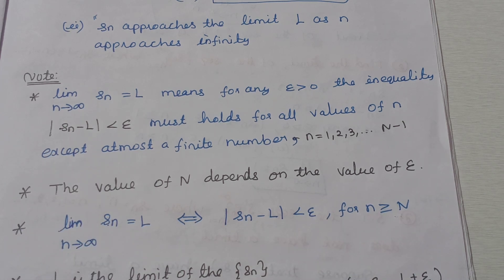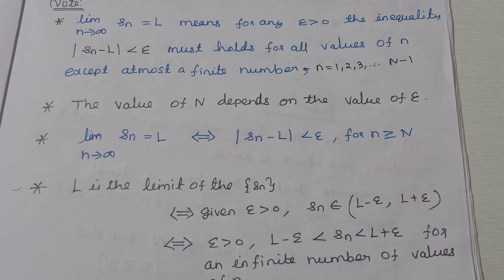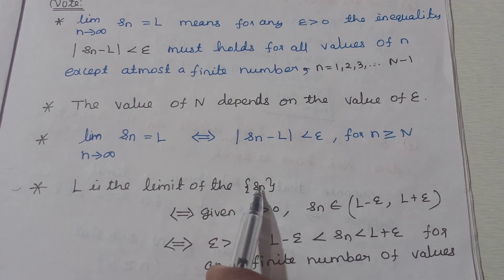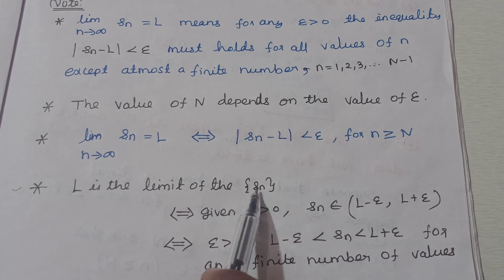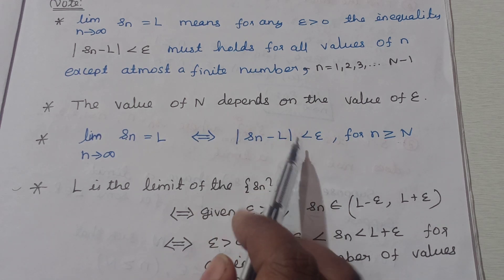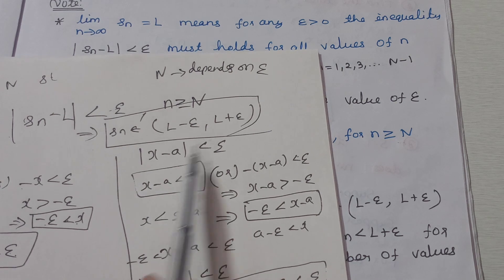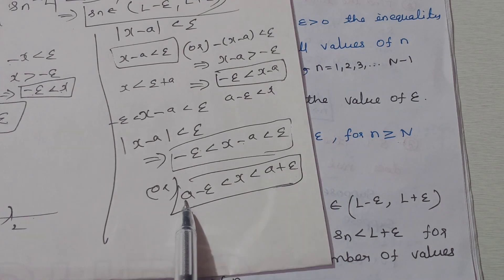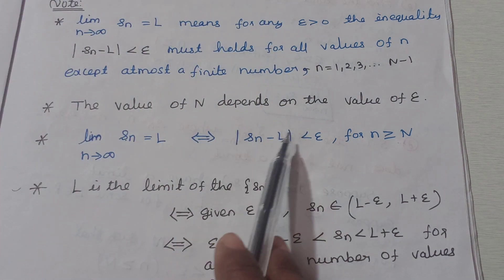So this is the limit of the sequence s_n. If and only if, given epsilon greater than 0, s_n belongs to the open interval (l minus epsilon, l plus epsilon). That means mod of (s_n minus l) less than epsilon is equivalent to a minus epsilon less than x less than a plus epsilon.